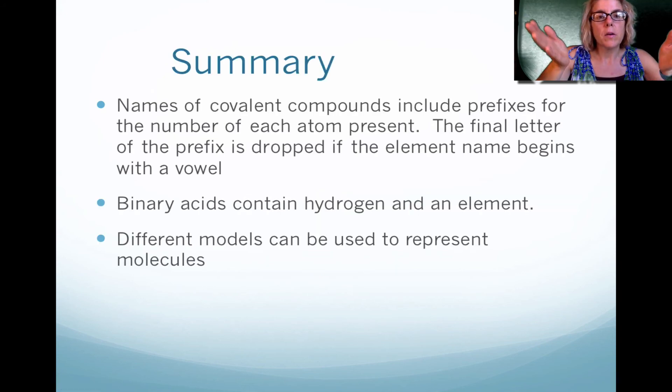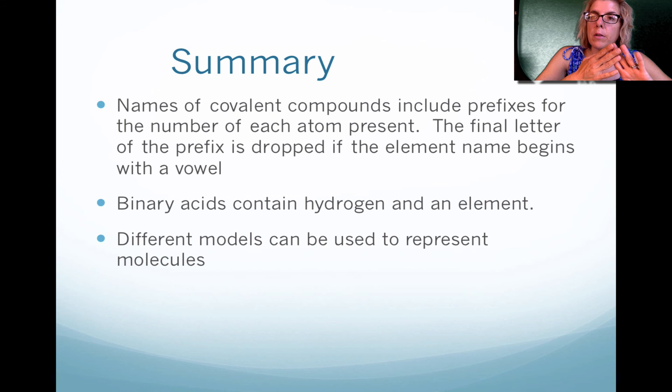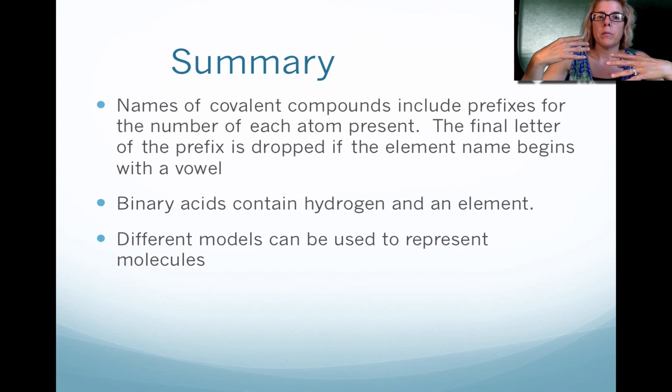Okay, so in summary, we need to look at prefixes. We also need to look at the types of elements that are in a binary compound. Please remember, the first element keeps its name, but the second one, the ending is changed, and it ends with IDE. Also, you might want to remember that with prefixes, if you have a vowel in the element's name, you're going to drop the final letter of the prefix, and we'll practice that in class.